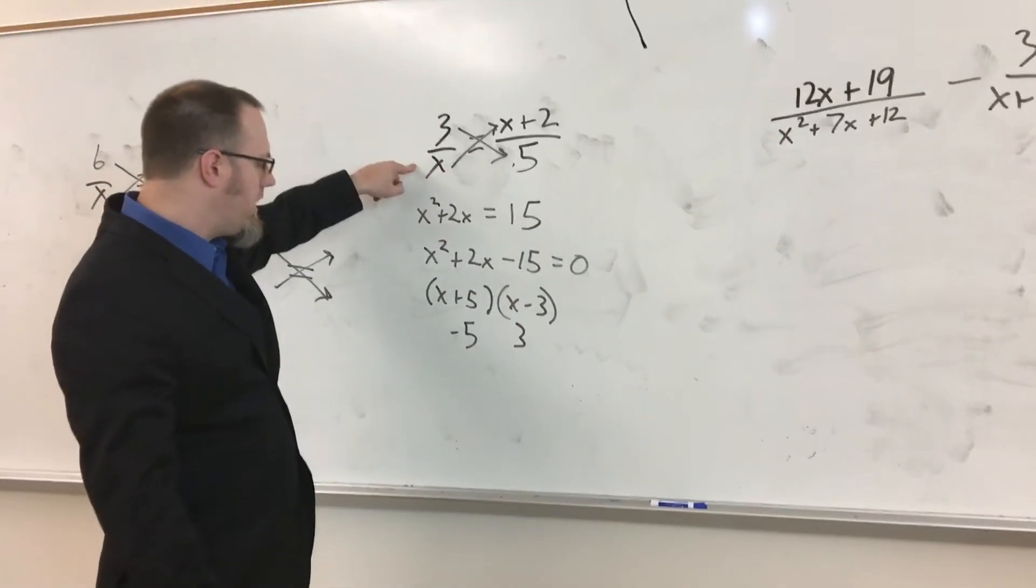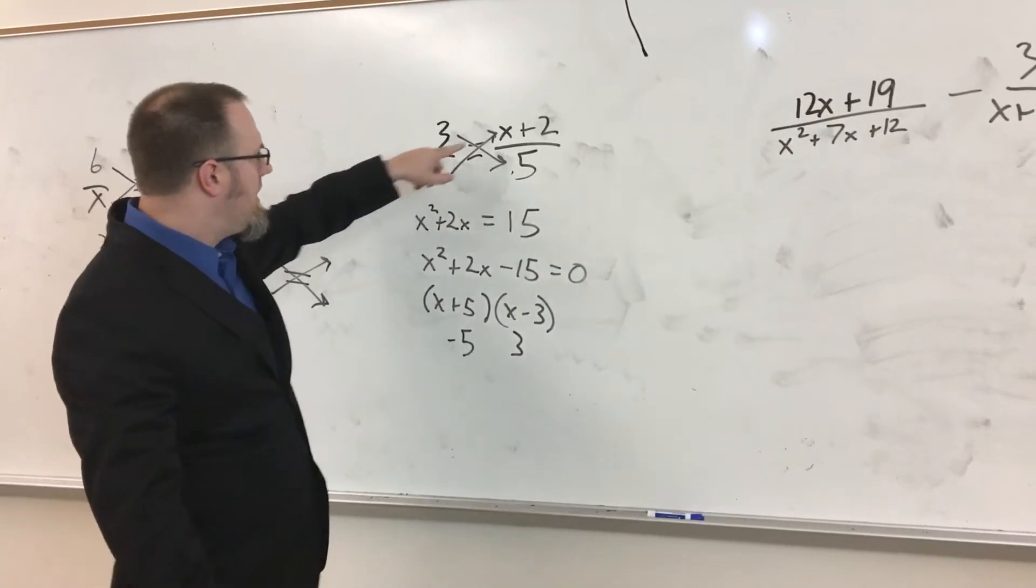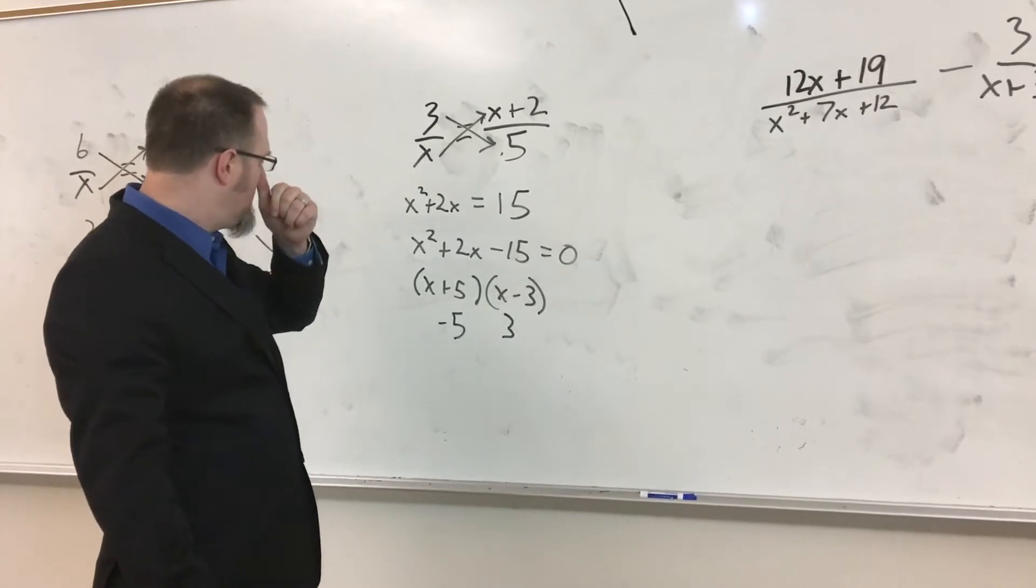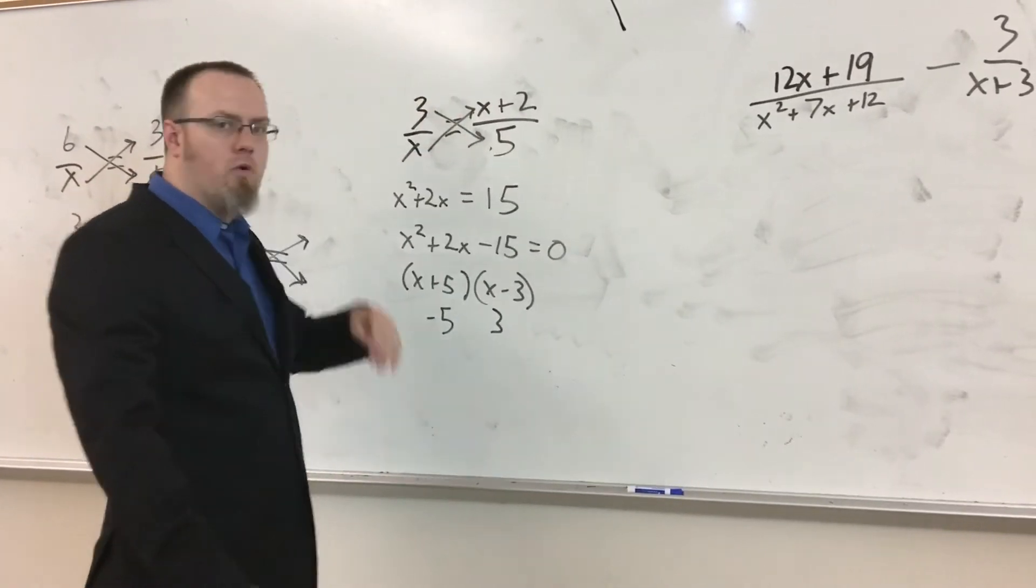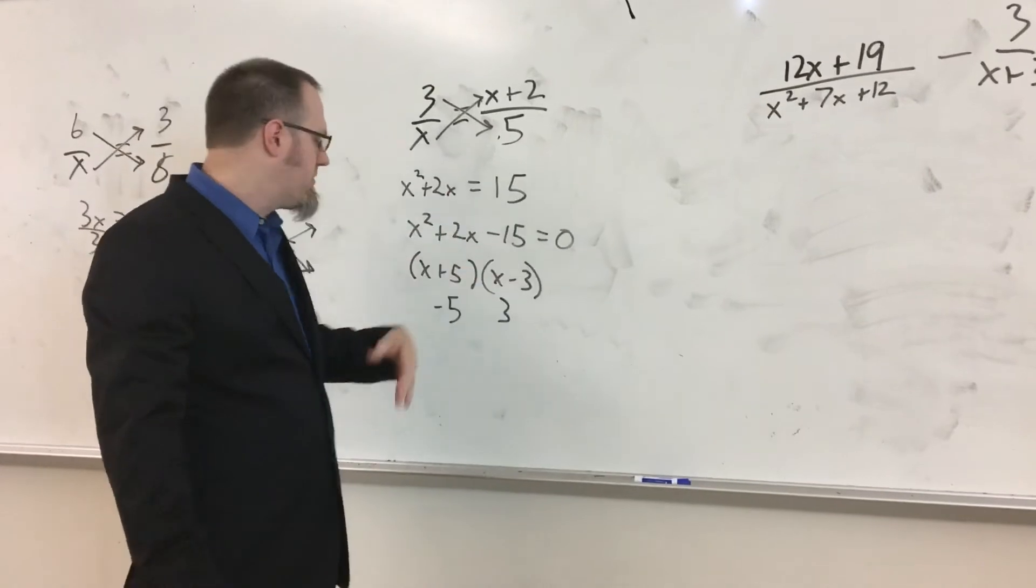So I go back to check. 3 over 3 would be 1. 3 plus 2 would be 5 over 5, which would also be 1. 1 equals 1, so that one's good.